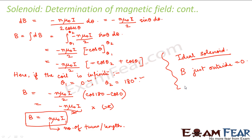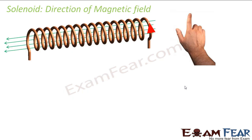So you understood what a solenoid is, what was the need to construct a solenoid, its practical uses, and how to determine its magnetic field. As for direction, the right-hand thumb rule still applies — the same rule as for a circular loop. If current is flowing in a given direction, curl all four fingers in the direction of current, and your thumb will point in the direction of the magnetic field.